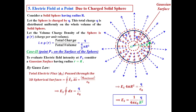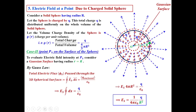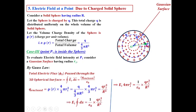Now consider a point P_i inside the sphere. The distance from the center to this point is r_i. To find the electric field intensity at P_i, we consider a Gaussian surface (shown as a blue dotted line) passing through the observation point, having radius r_i. According to Gauss's law, the total electric flux through this 3D Gaussian spherical surface equals the surface integration of E_i · ds = Q_enclosed / ε₀.